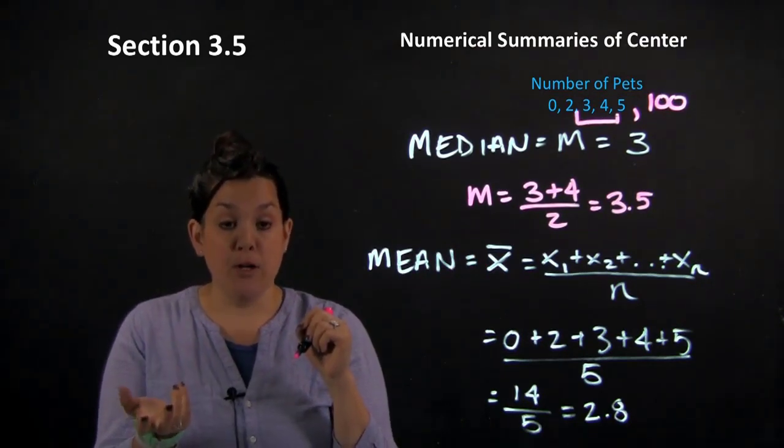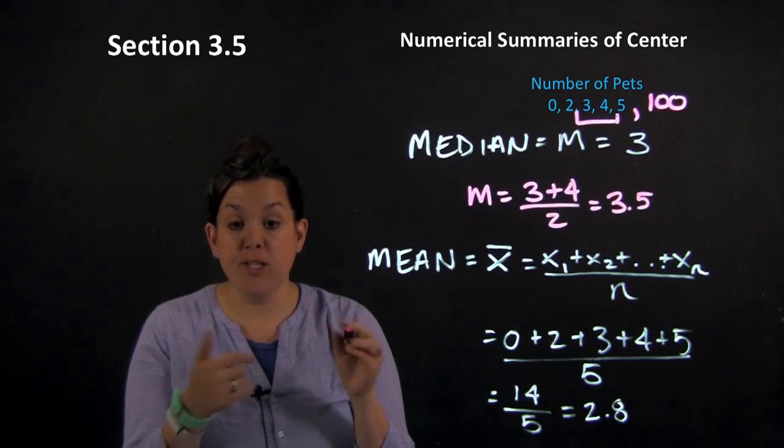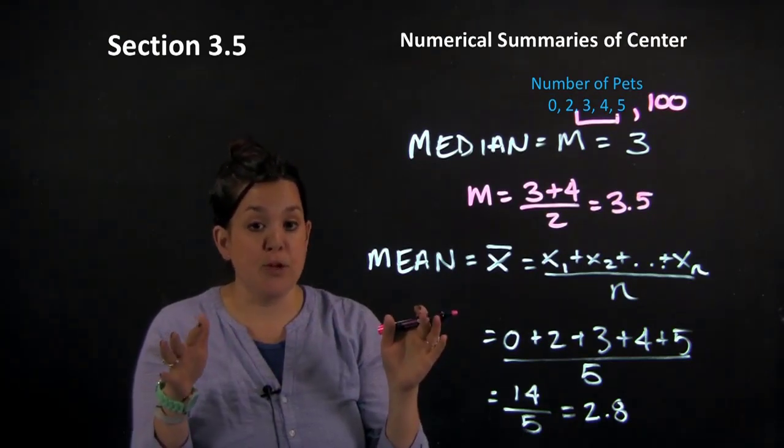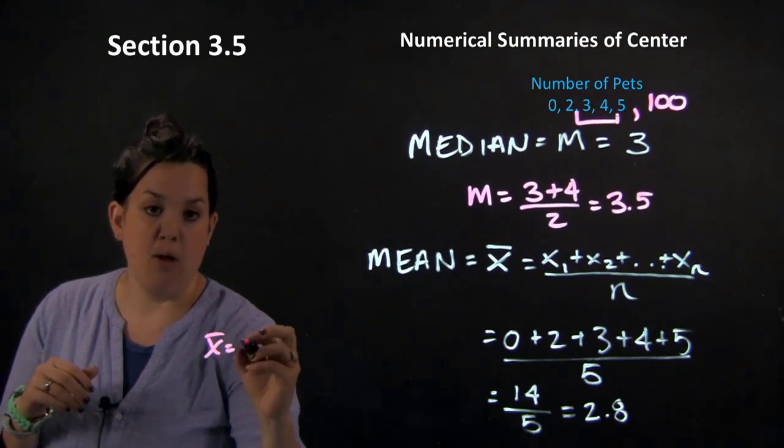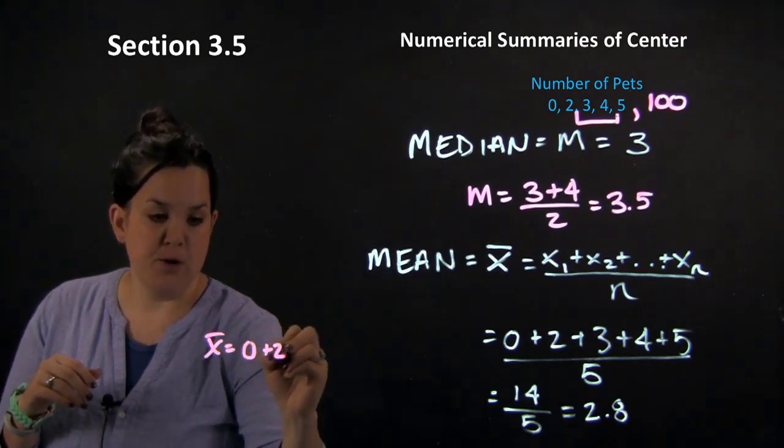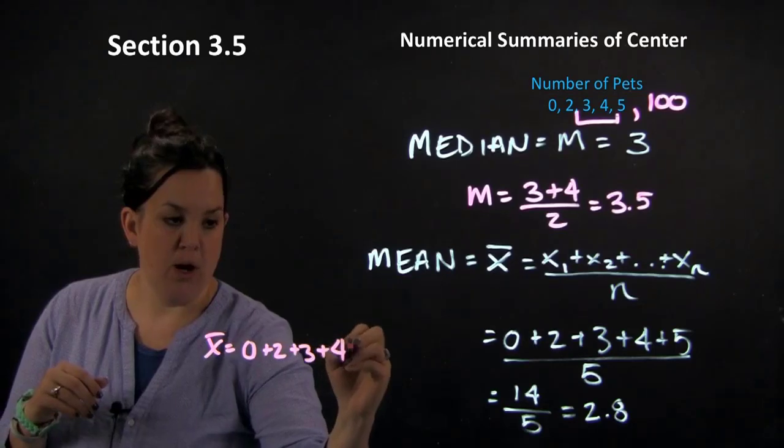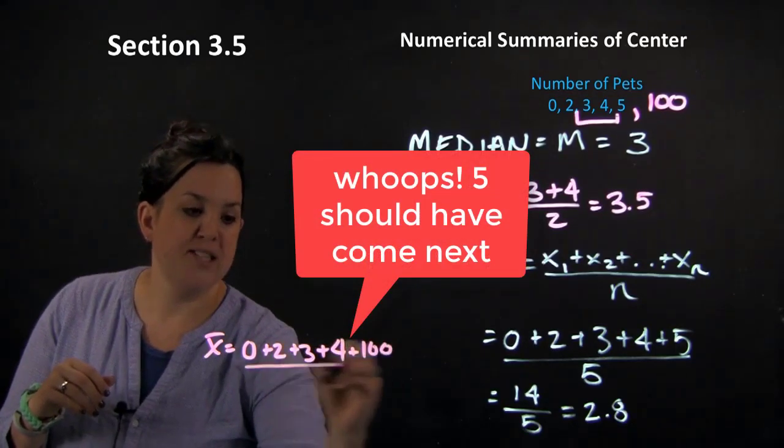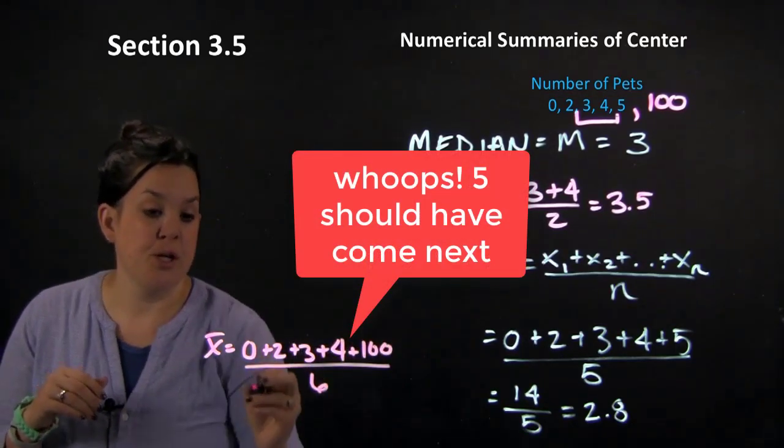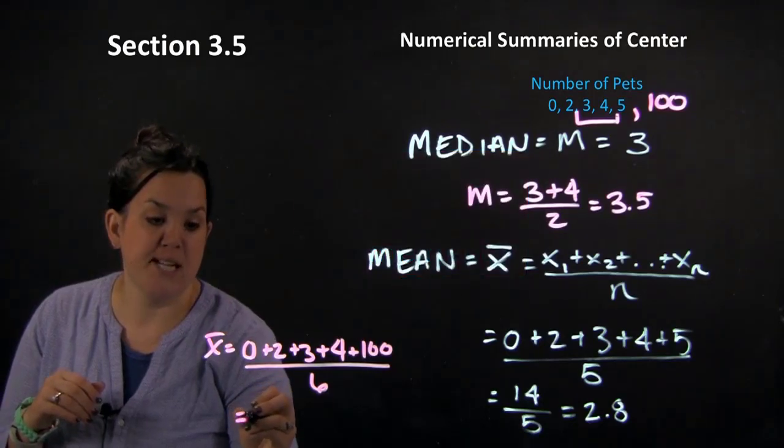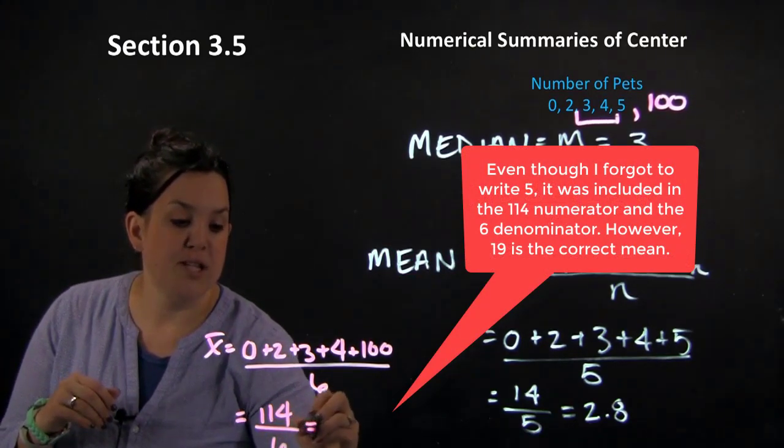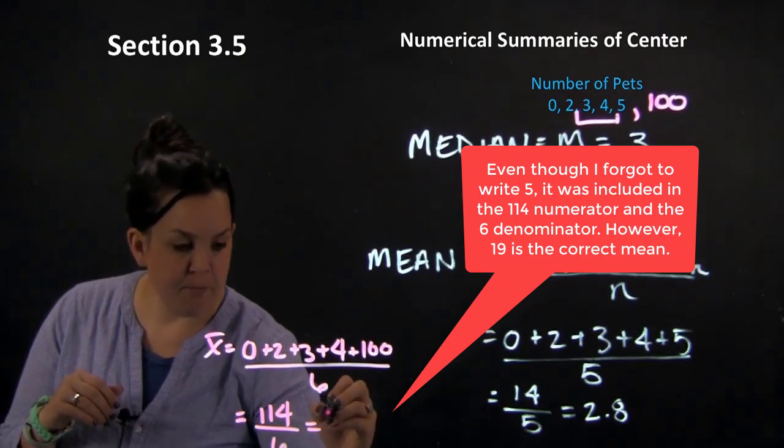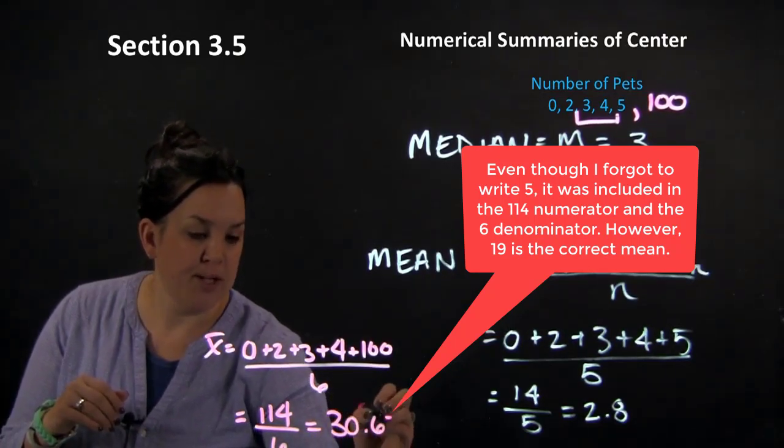So now, if I were to find the mean, I'm going to still add all of my observations, but I want to show you what happens when you do that and an outlier is present. So we have 0, 2, 3, 4, and 100. This time, because we added an observation, it's going to be divided by 6. So I have 114 divided by 6. So this time, I have a mean of 30.67.